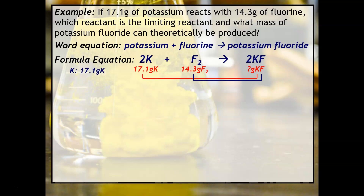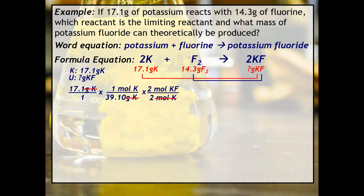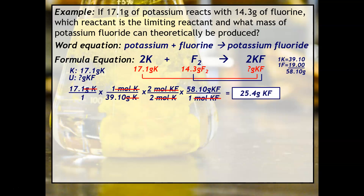Starting with the first calculation: take 17.1 grams of potassium, convert to moles of potassium using its molar mass, apply the mole ratio between potassium and potassium fluoride, then convert moles of KF to grams using the molar mass of KF. When you calculate this, you get 25.4 grams of potassium fluoride — but we don't yet know if that's the actual amount produced, because we haven't confirmed whether potassium is the limiting reactant.